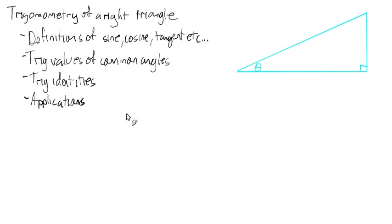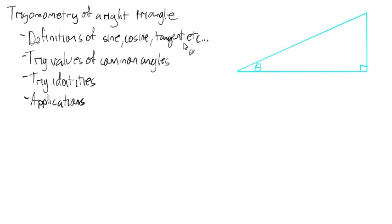We're going to go into section 4.3 — we're skipping 4.2 for a little bit and we'll come back. In 4.3, we're going to talk about the definitions of sine, cosine, and tangent. We'll start with that.